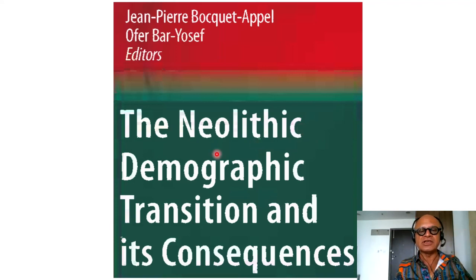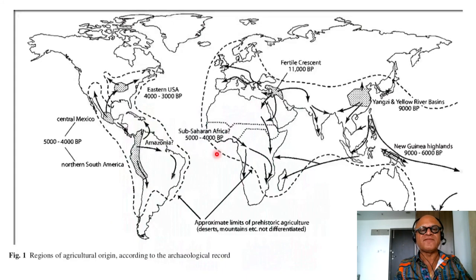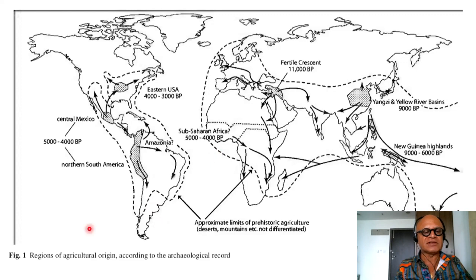This book looks at the Neolithic demographic transition and its consequences. I'm going to take a few figures from different chapters to make some additional points. We are returning here to how demographic transitions happened and their relations with agricultural origins.